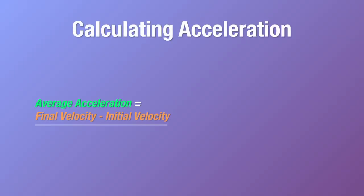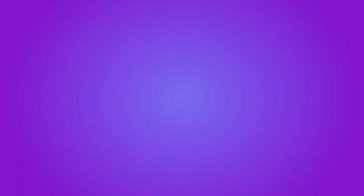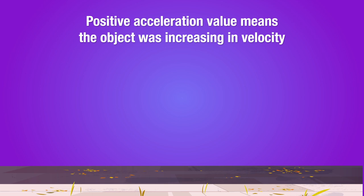But how do we calculate acceleration? Well, as we've talked about earlier, acceleration is the rate of change of speed or velocity, and we can calculate it by finding the average change in said speed or velocity per unit time. This means that average acceleration is the difference between the starting and the ending speed or velocity, divided by the time interval between them. Acceleration is therefore denoted in meters per second squared.